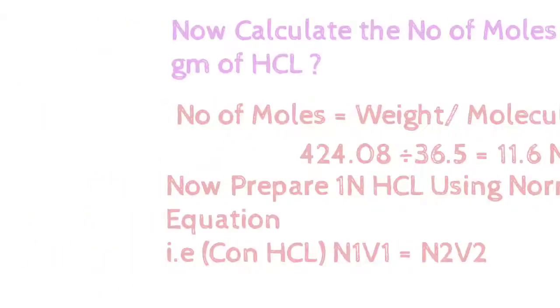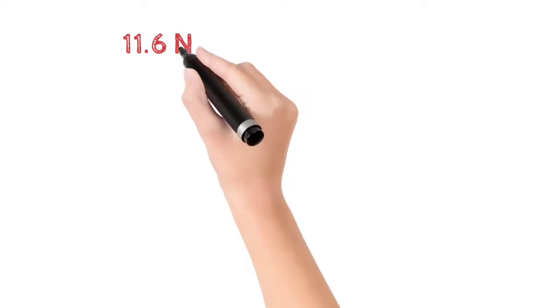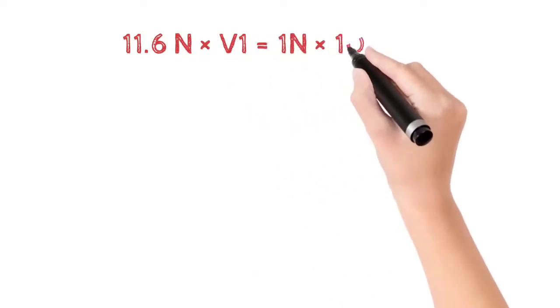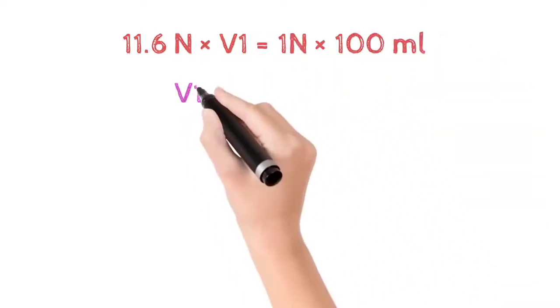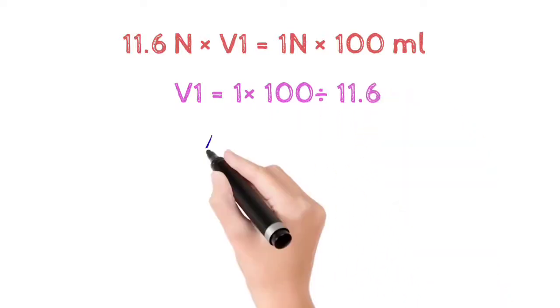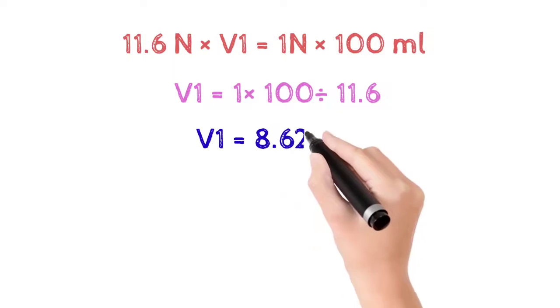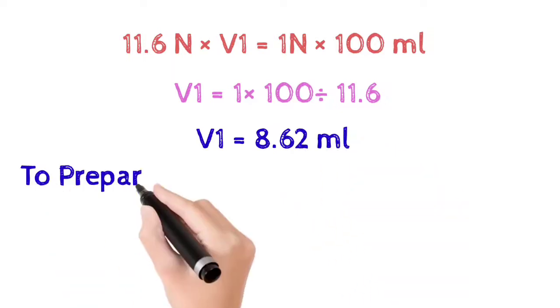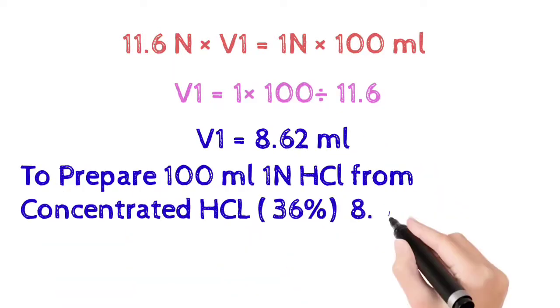Now prepare 1 normal HCl using the normality equation which is N1V1 equals N2V2. We know the normality required N2 is equal to 1 normal and the volume we are taking here is 100 ml. So V1 equals 1 into 100 divided by 11.6. The volume we require is 8.62 ml.